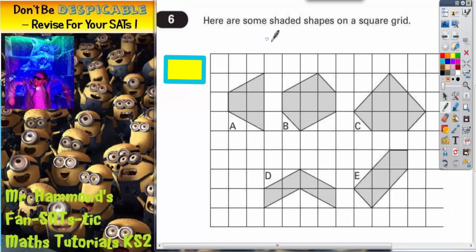Question 6. Here are some shaded shapes on a square grid. So we've got shapes A, B, C, D and E.